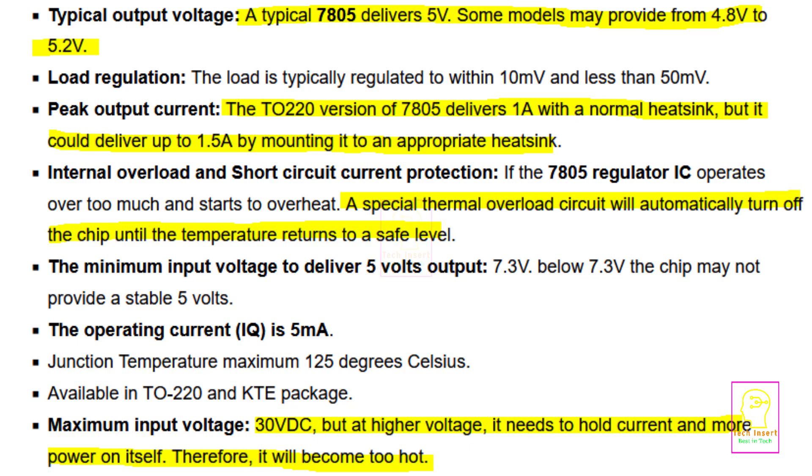But it can deliver up to 1.5 ampere to the load if you are fixing the 7805 in a very big heatsink. 7805 comes with an overload or overcurrent protection, but it is not like sensing the current and shutting down. Instead, when overcurrent is flowing, the temperature increases and that heat is sensing and will shut down. In short, a thermal shutdown.